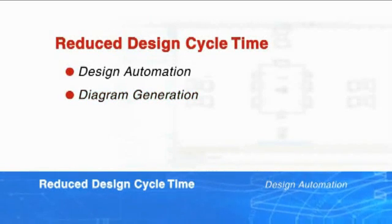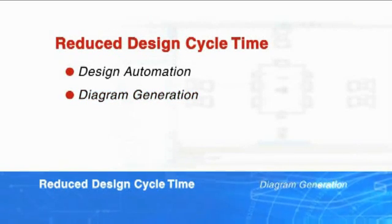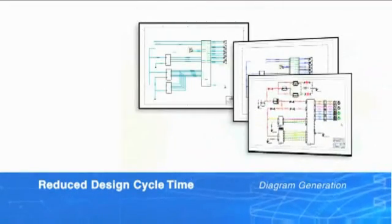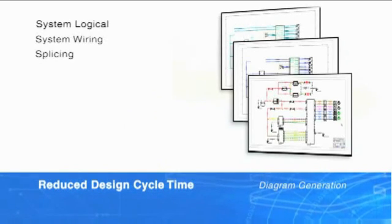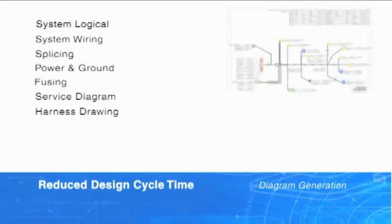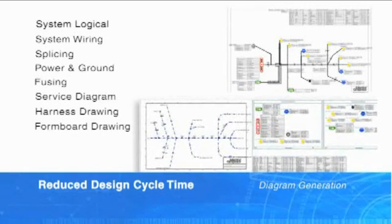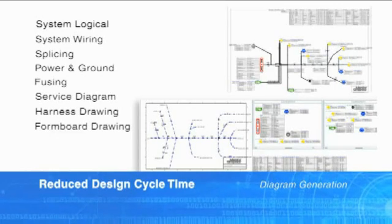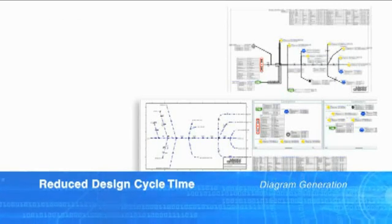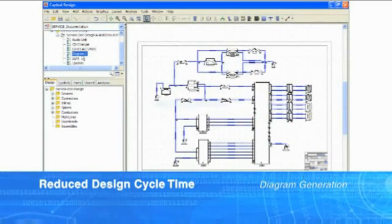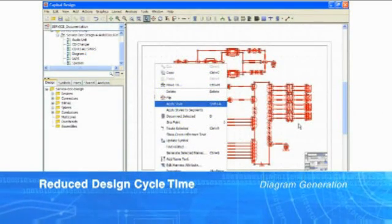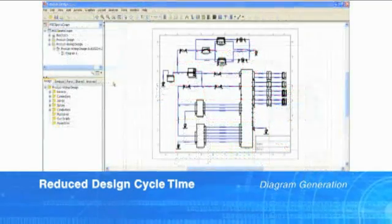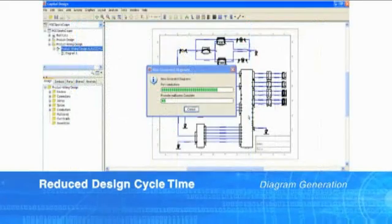Diagram Generation. The electrical design process often requires the creation of several different forms of schematic connectivity diagrams to suit particular purposes. Despite these diagrams sharing the same underlying connectivity information, most companies create each diagram type as independent entities. With CHS, companies can automate significant parts of this process, eliminating the effort traditionally required to draw and check each drawing. Engineers can define styling templates that change the style and appearance of a diagram at the touch of a button, and AutoView technology allows diagrams to be reconfigured and generated automatically.